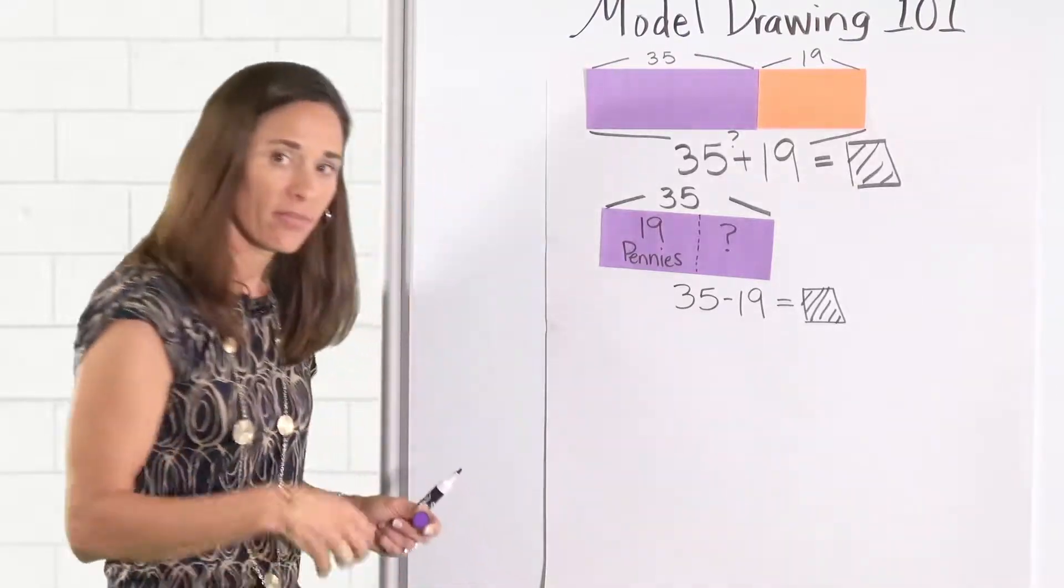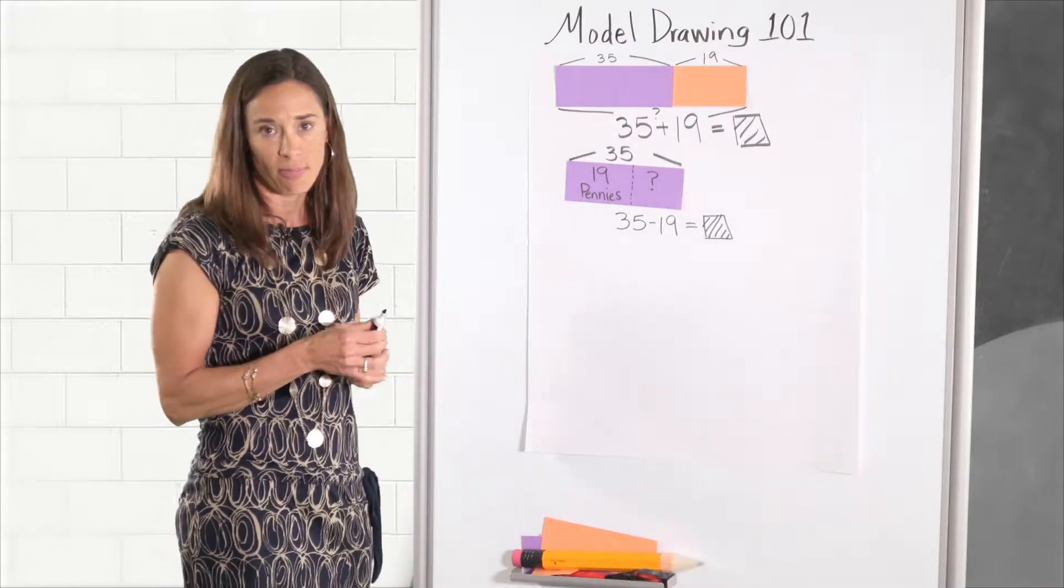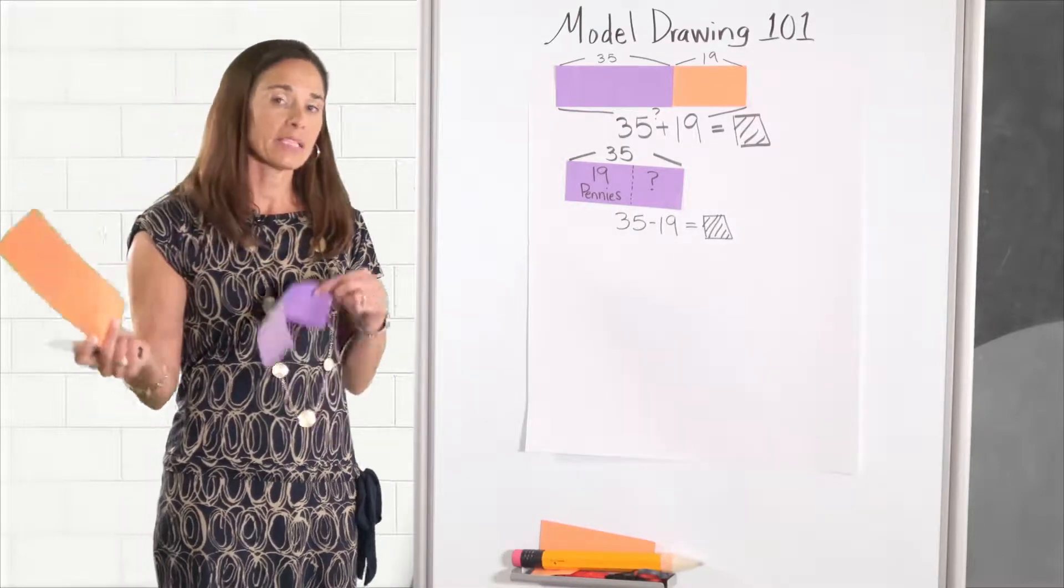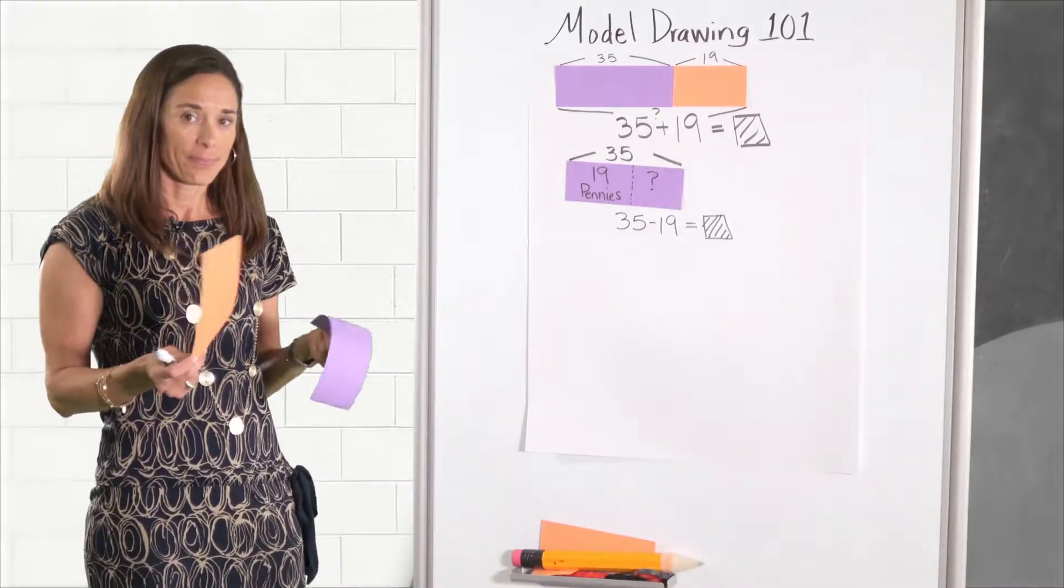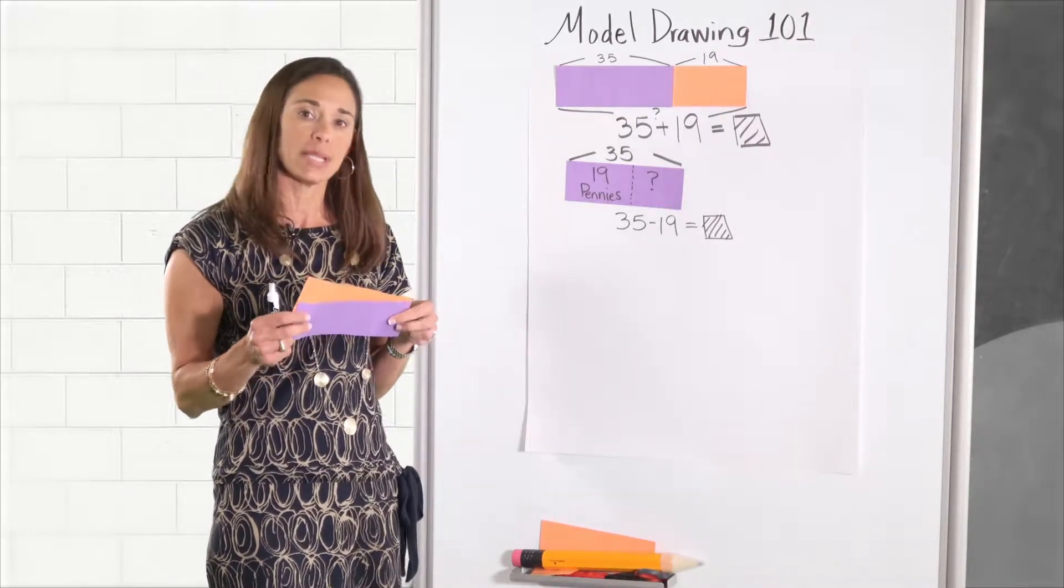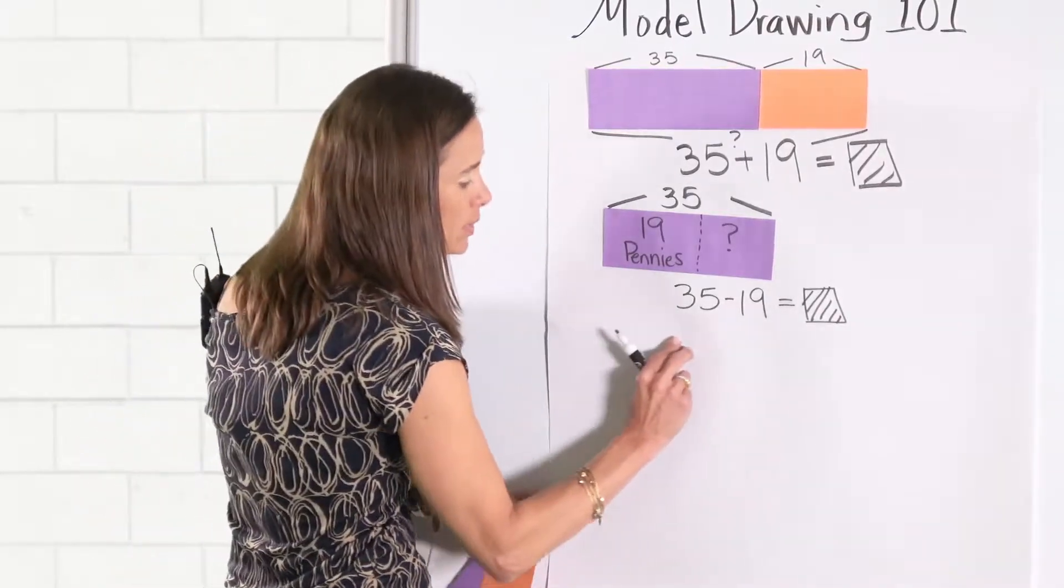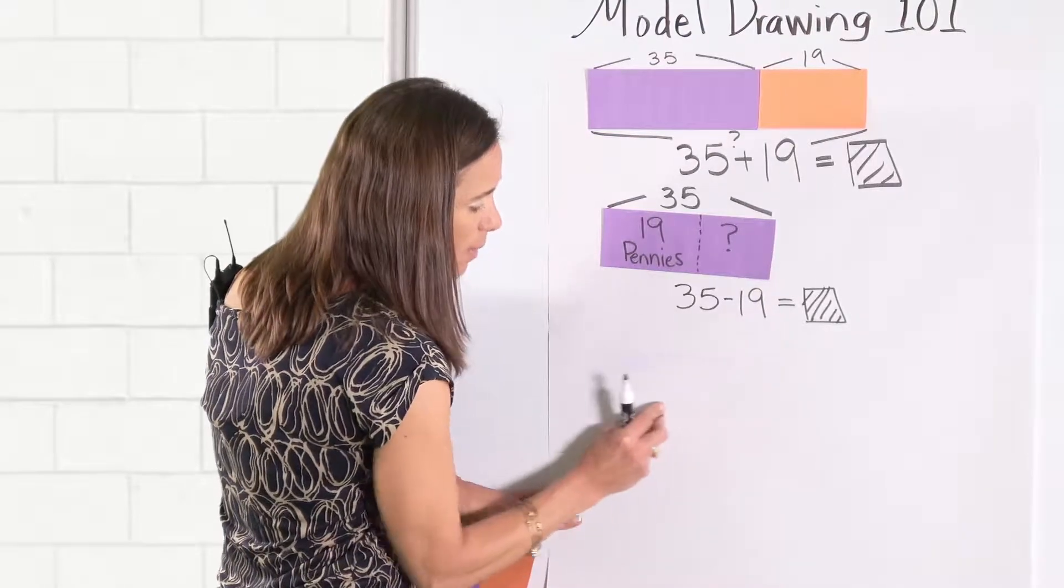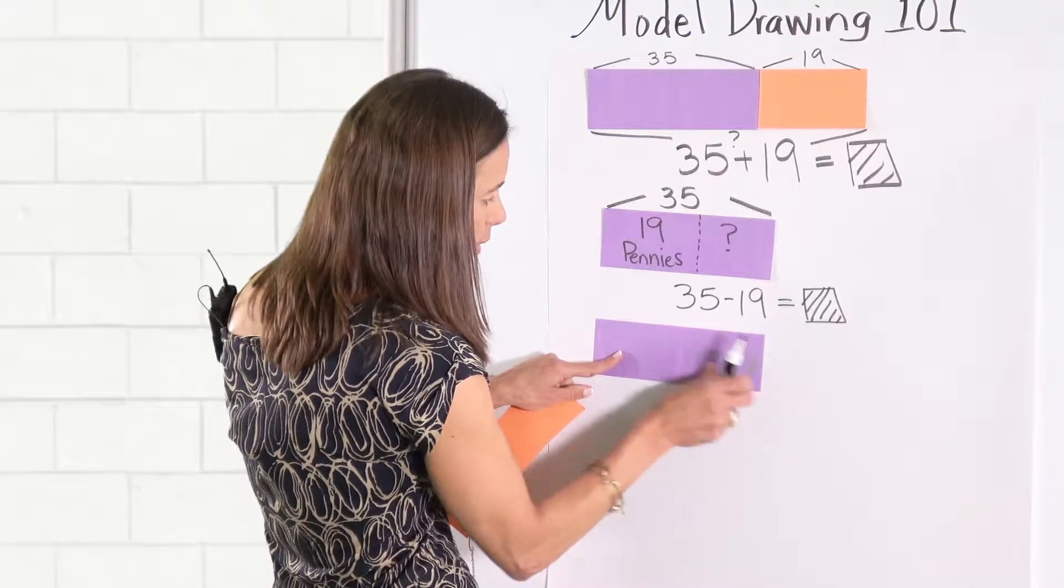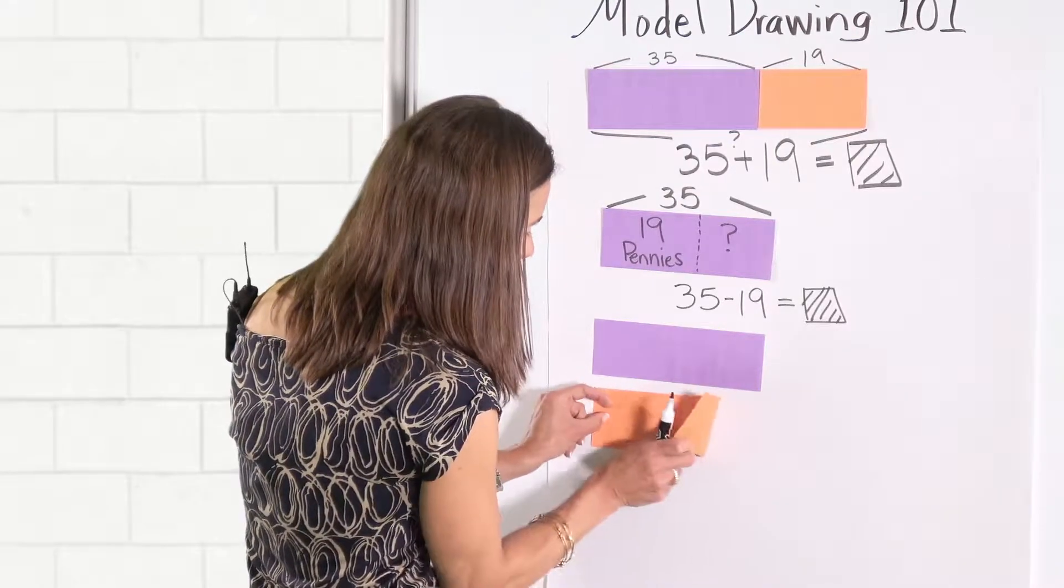The next type of problem that we can talk about with addition and subtraction is the comparative model. Comparative in nature you would see words like has more than, fewer than, etc. So in this problem you can read Spikey has 19 more coins than Curly. So just as we would do with our cubes, we would start our models by what some kids would refer to as stacking them. And so we would have one model and we might stack the other to see the relationship between them.